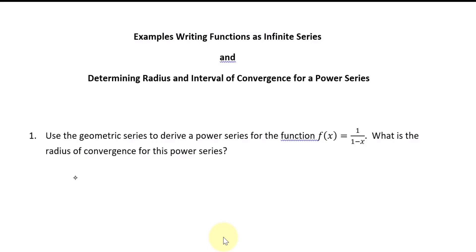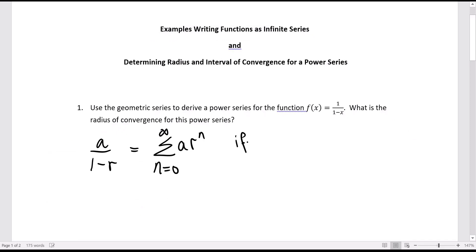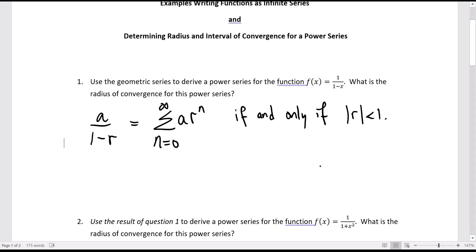Question one: use the geometric series to derive a power series for the function f of x equal to 1 over 1 minus x, and what is the radius of convergence for this power series? We'll start off with the formula for a geometric series that converges: a is the first term, r is the common ratio, and it converges if and only if that r value is less than 1 in absolute value.